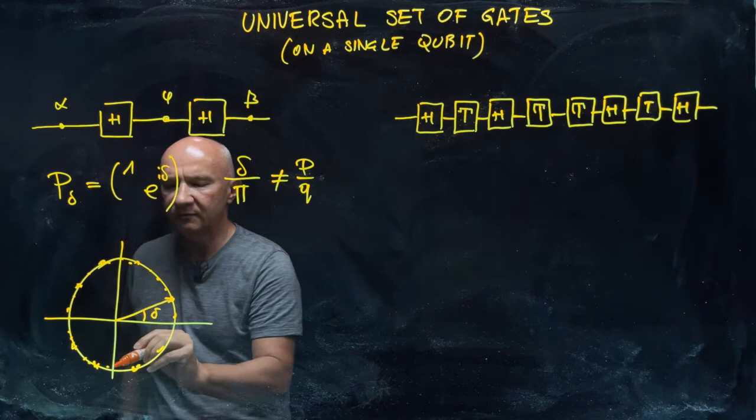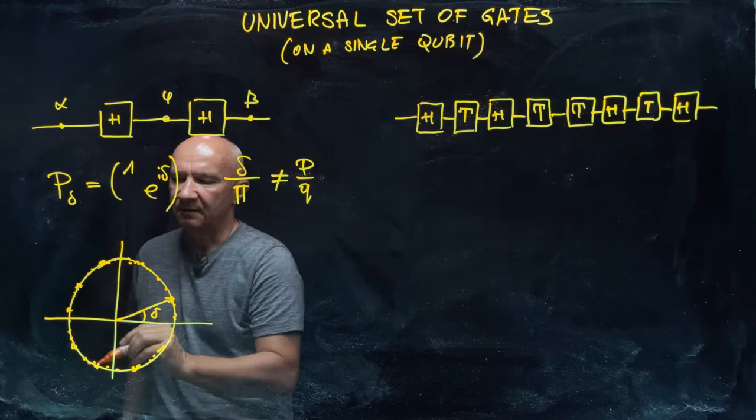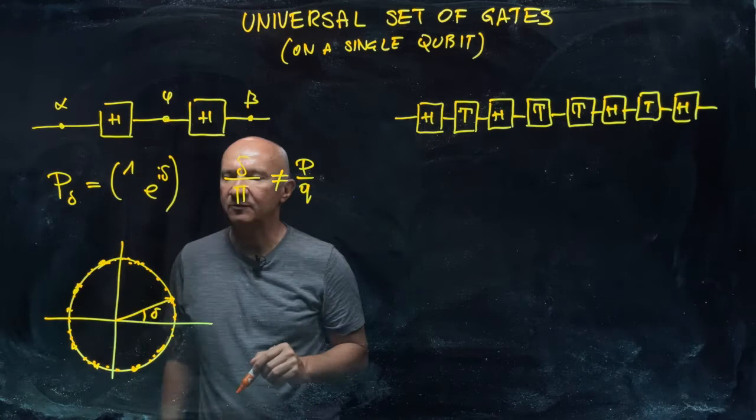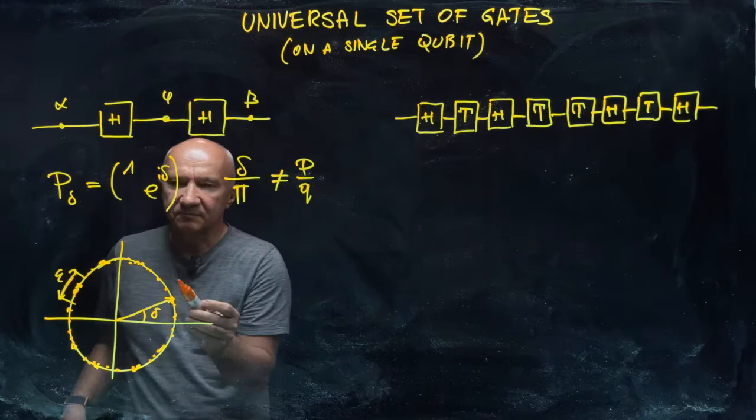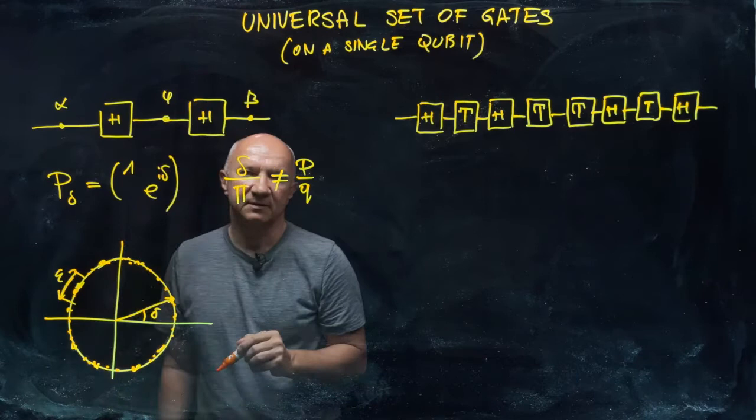And then you realize that if you keep on doing this, you are densely populating this circle. So in other words, you are approaching any point. If I pick up any point here and consider an interval epsilon around any point here, then I can certainly, after performing a certain number of steps, land somewhere there.